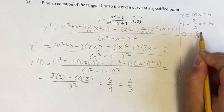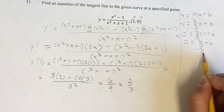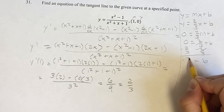0 equals 2 thirds plus b, subtract both sides by 2 thirds, we get that b is equal to negative 2 thirds.